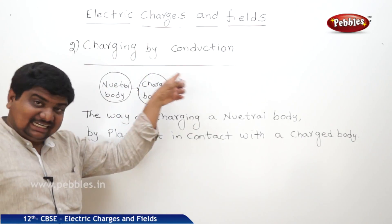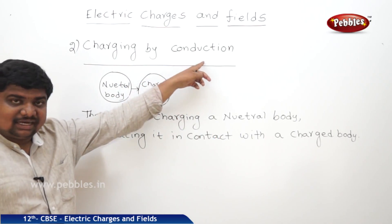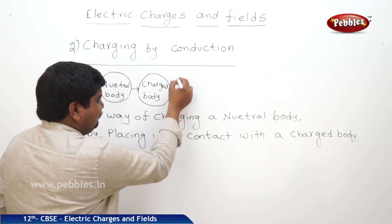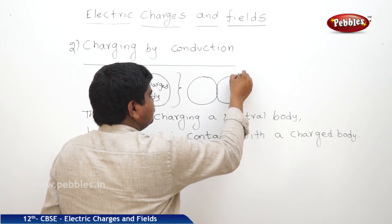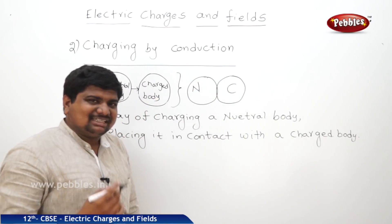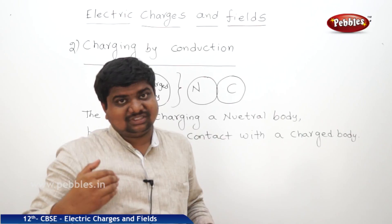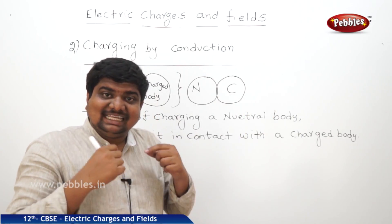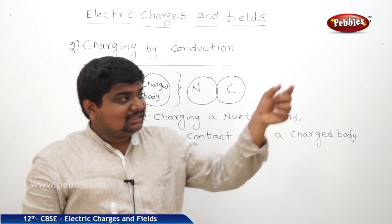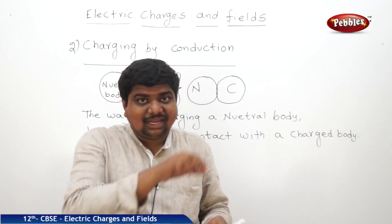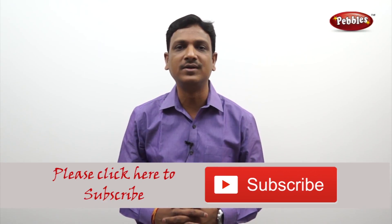We already discussed induction — there, there is no contact; the bodies are separated, and we have induced charge and inducing charge. In conduction, the source and receiver are in contact. A best example of conduction: when we charge our mobile phones, we plug them in when the power decreases — the mobile is under a charging process through conduction, because the source and receiver are in contact through the plug. Please give a thumbs up and subscribe to our channel for more videos on the CBSE syllabus.